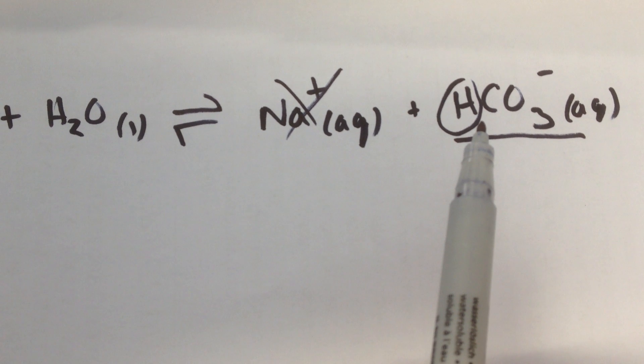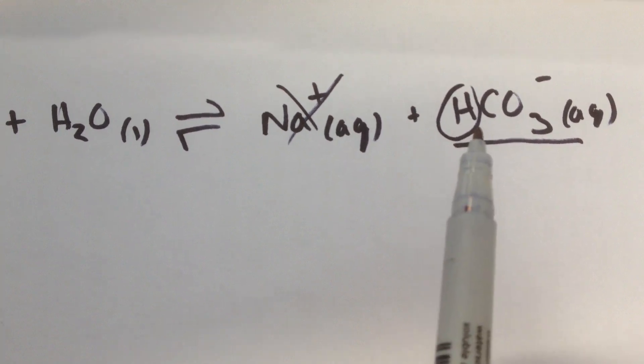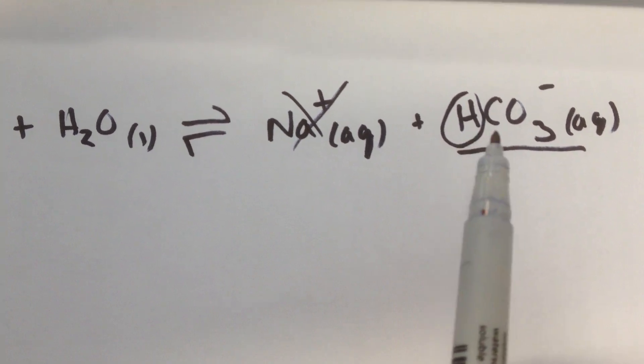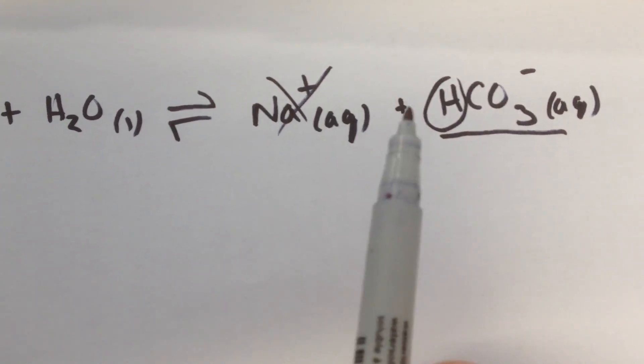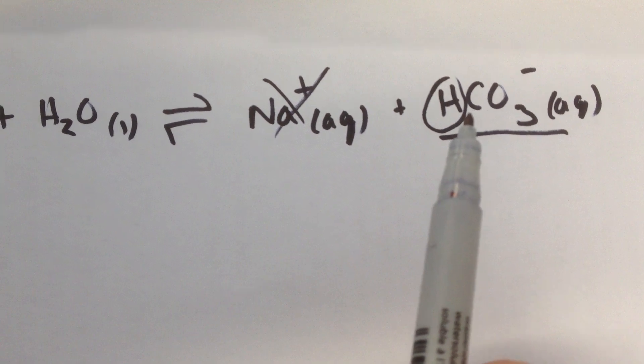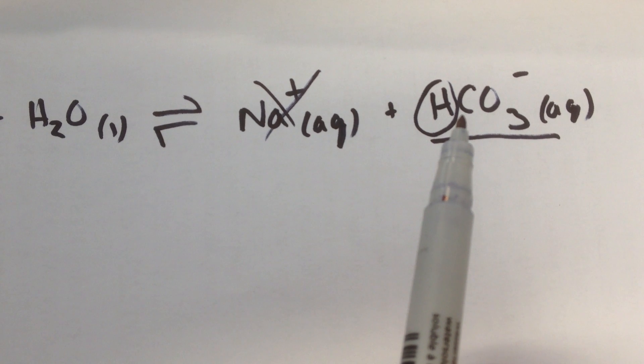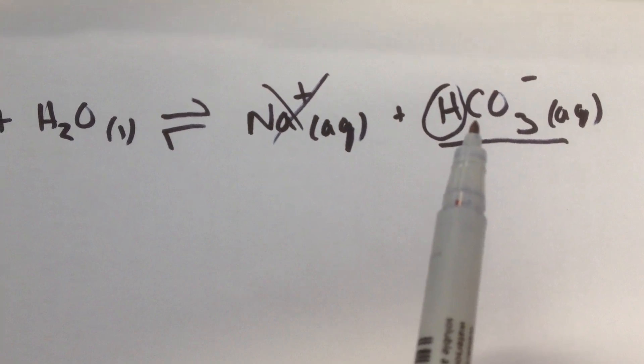if we tested this solution with a pH probe, we'd actually find the opposite is true. This compound is going to react further with water because this is the conjugate base of a weak acid. And the conjugate base of the weak acid means that it's going to act further as a base. It's going